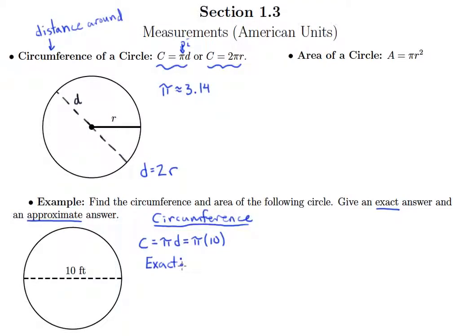So pi times 10, our exact answer is going to be the answer where we just leave pi as a symbol. Typically we like to put our number before any kind of symbol like pi, so what I'll write is 10 pi feet.